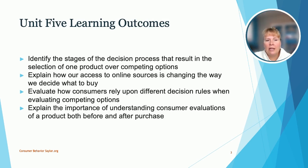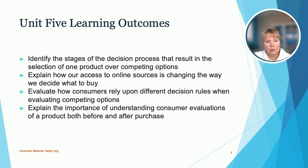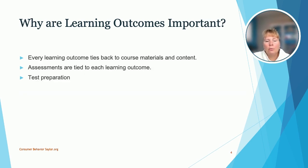Here are the Unit 5 learning outcomes. We have: identify the stages of the decision process that result in the selection of one product over competing options; explain how our access to online sources is changing the way we decide what to buy; evaluate how consumers rely upon different decision rules when evaluating competing options; and explain the importance of understanding consumer evaluations of a product both before and after a purchase. Every learning outcome ties back to your course materials and content, including your assessments and test preparation.